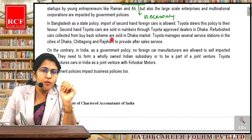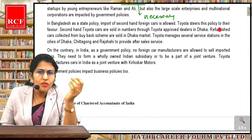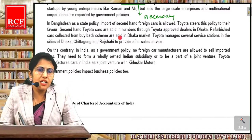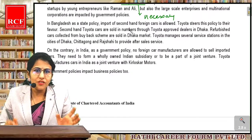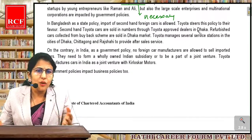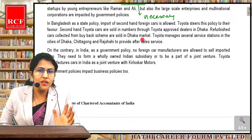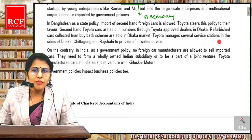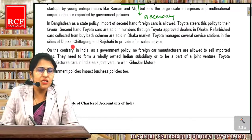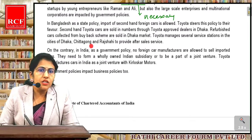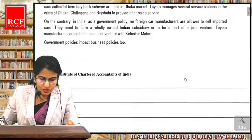Refurbished cars collected from buyback schemes are sold in the Dhaka market. Toyota company kya karti hai — USA aur jahan bhi countries mein they are selling their cars, wahaan se old cars they brought to Dhaka, refurbished karke — polish, spares, sab change karke naya bana do uska — and they are sold in the market. Toyota manages several service stations in the cities of Dhaka, Chittagong and Rajshahi to provide after-sale services.